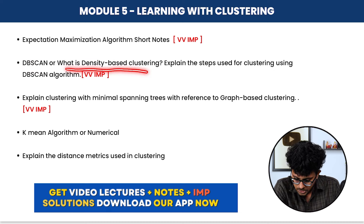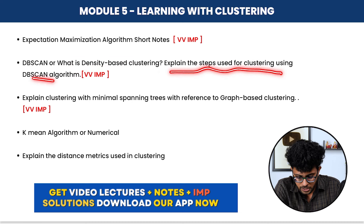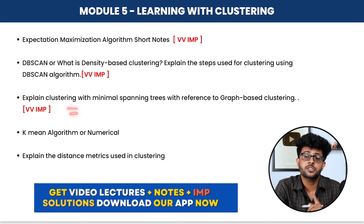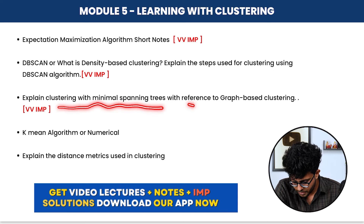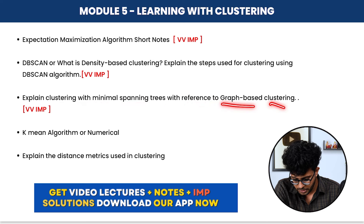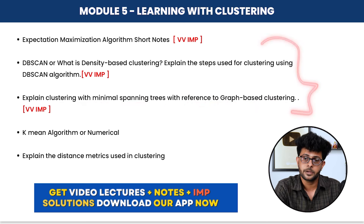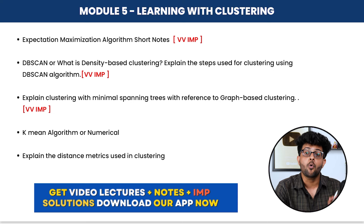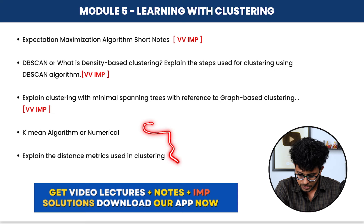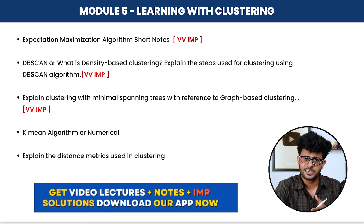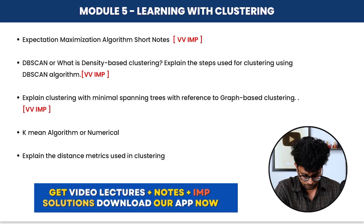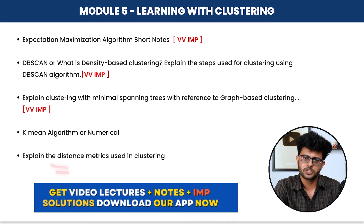Module 5 covers clustering. Important questions include: what is density-based clustering and explain the steps for clustering using the DBSCAN algorithm. Another very important question that has appeared in past papers is: explain clustering with minimum spanning tree with reference to graph-based clustering. Also know the distance matrices used in clustering.